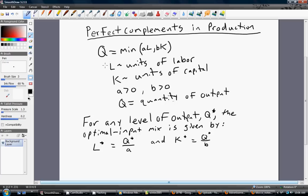The production function tells us that output of the firm will be the minimum of what's in parentheses here: A times L or B times K. L is our usual units of labor, and K is our usual units of capital. A is some parameter greater than zero, likewise B is some parameter greater than zero.